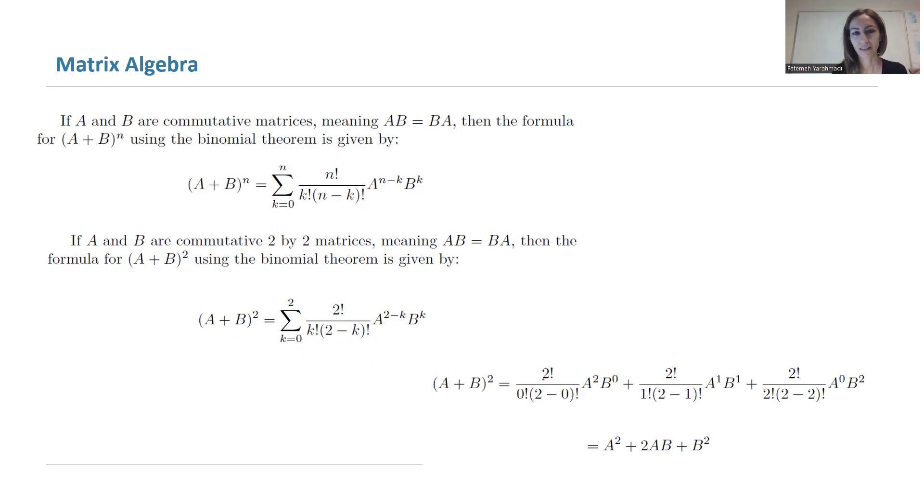In simpler form, this is 2 factorial divided by 0 factorial times (2 minus 0) factorial, times A² times B⁰. Remember, we defined the power of the matrix to the 0 as the identity matrix.